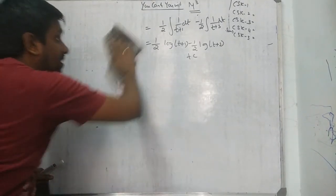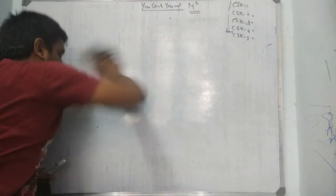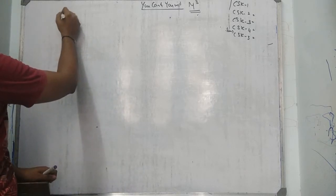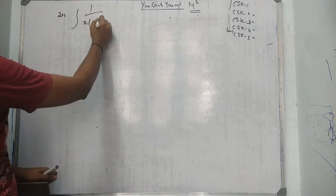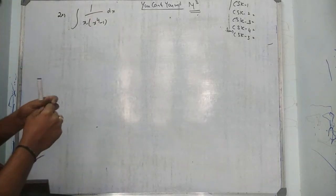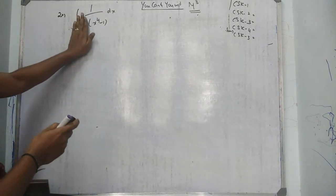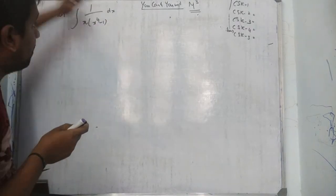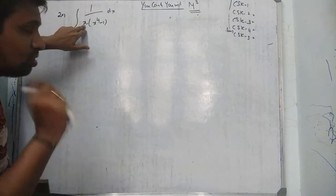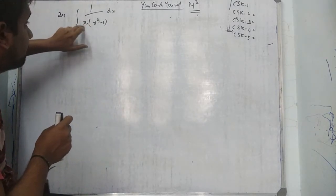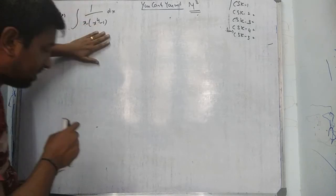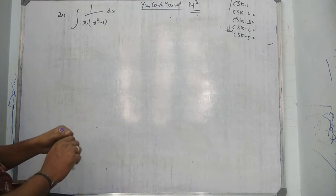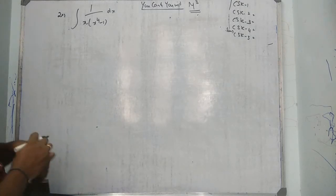As I said earlier, question number 20 is quite an interesting sum. Question 20: 1 over x(x⁴ minus 1) dx. The x⁴ can be written as (x² + 1)(x² minus 1). If you let x² equal to t, numerator is nothing — but you need to multiply and divide by x² to get the answer.